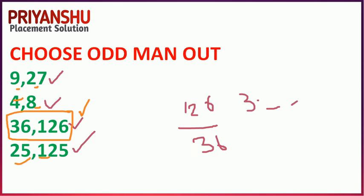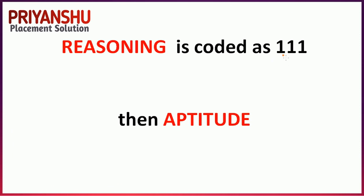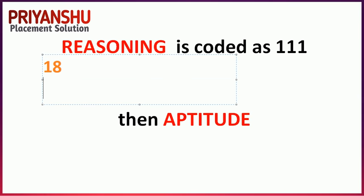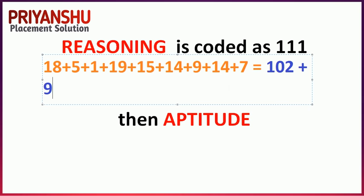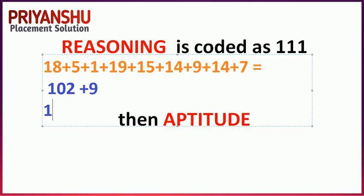Next question: REASONING is coded as 111. What is the code for APTITUDE? The logic: find the alphabet position of each letter in REASONING — R=18, E=5, A=1, S=19, O=15, N=14, I=9, N=14, G=7. Adding all values gives 102, then add the count of letters (9), so 102+9=111.